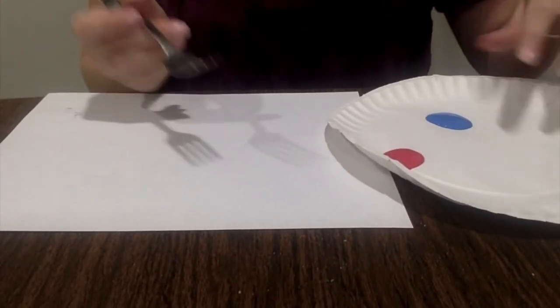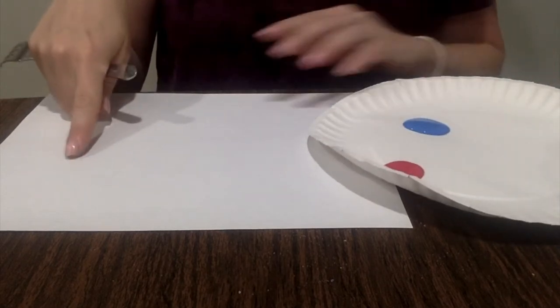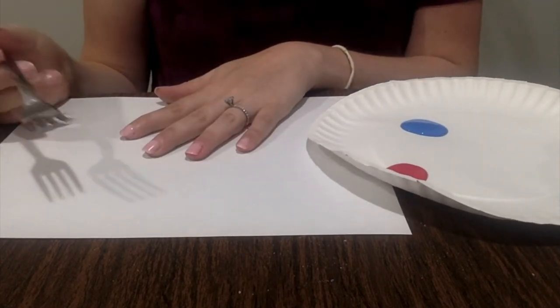So I just have my fork and I have some washable red paint and some washable blue paint in front of me and a white piece of paper. You could use whatever piece of paper you want.